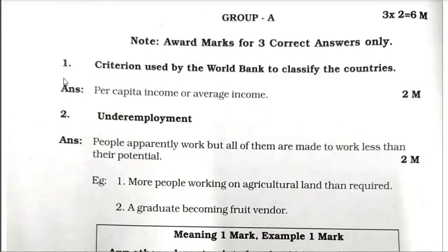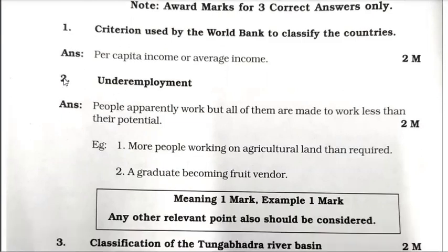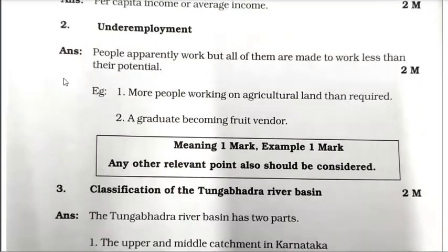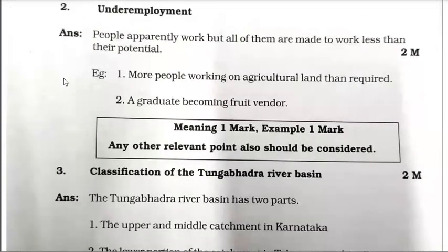The criterion used by the World Bank to classify countries — per capita income or average income is the answer. If you write that, you will get 2 marks. For the underemployment question, the marking is: meaning 1 mark, example 1 mark.